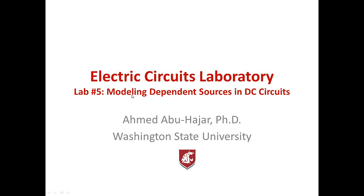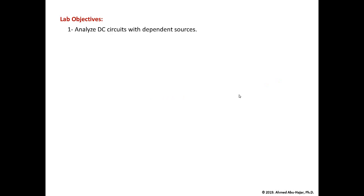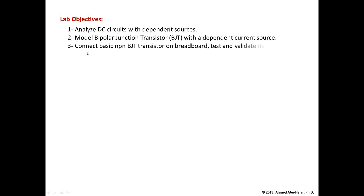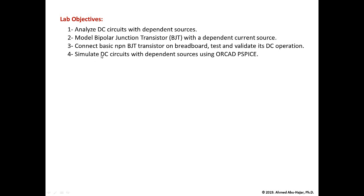In lab five we are interested in modeling dependent sources in DC circuits. The first objective is that students will be able to analyze DC circuits with dependent sources. Students will be able to model bipolar junction transistors, we call them BJTs, with a dependent current source. Then students will learn how to connect basic BJTs on the breadboard and test and validate DC operation. Finally, students will be able to simulate DC circuits with dependent sources using ORCAD P-SPICE.